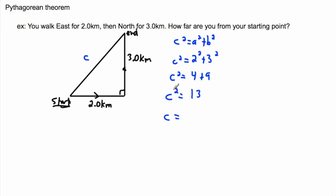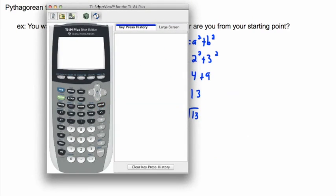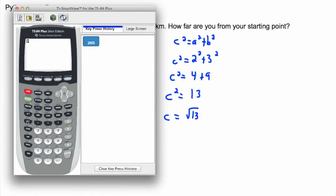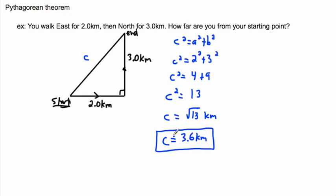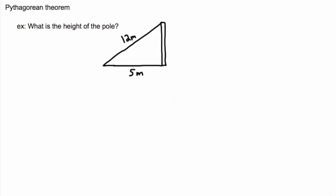So c squared equals 13. To get c on its own, I take the square root of both sides — the square and square root undo each other — giving c equals the square root of 13. Technically there's a positive and negative solution, but we keep the positive one since a negative length doesn't make physical sense. Using a calculator, the square root of 13 is approximately 3.6, so c is approximately 3.6 kilometers.